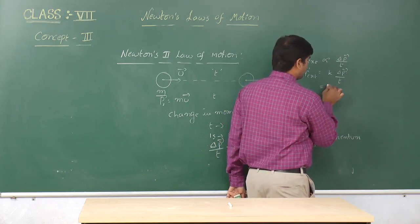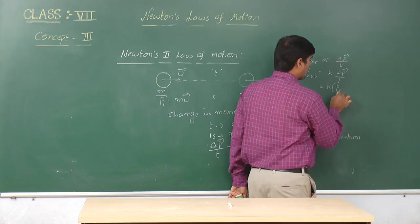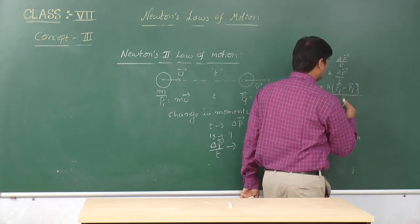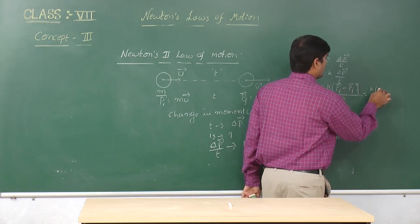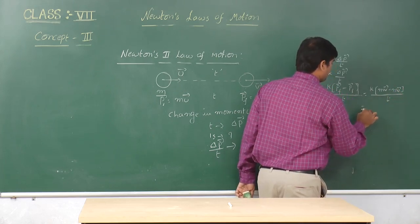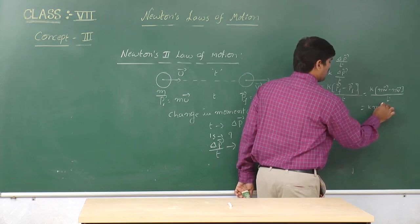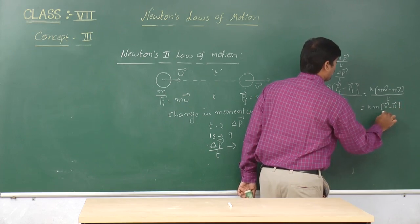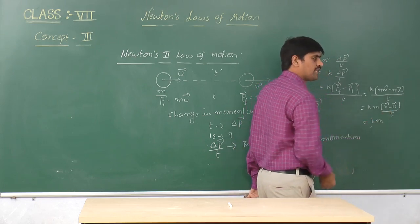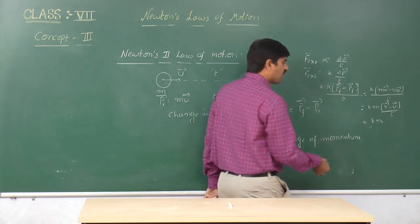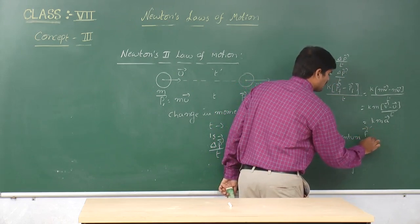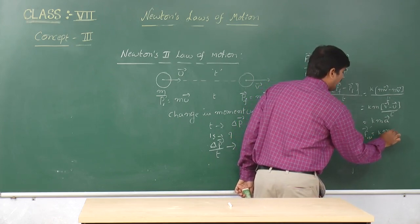So F_external is equal to k times Δp/t. We can write this as k times (p_f minus p_i) divided by t, which gives k times m(v minus u) divided by t. Since (v minus u)/t is the change in velocity per unit time, this is acceleration. So we get F_external equal to k*m*a.